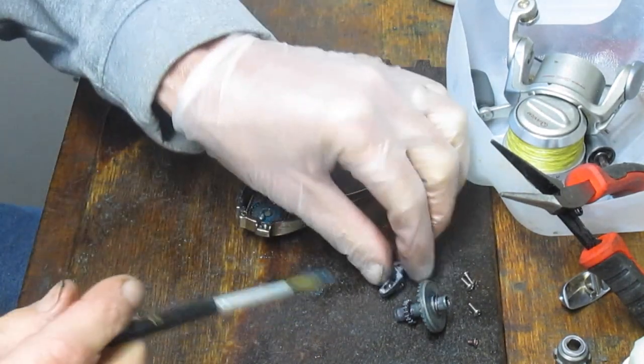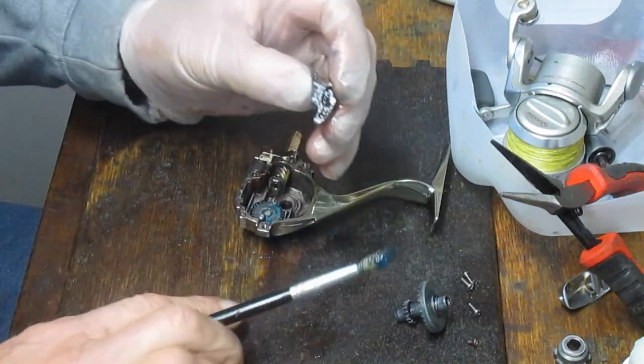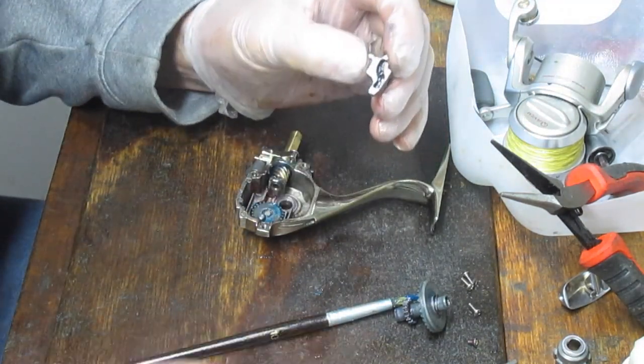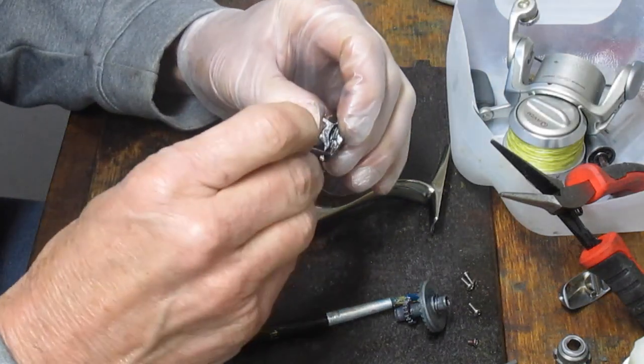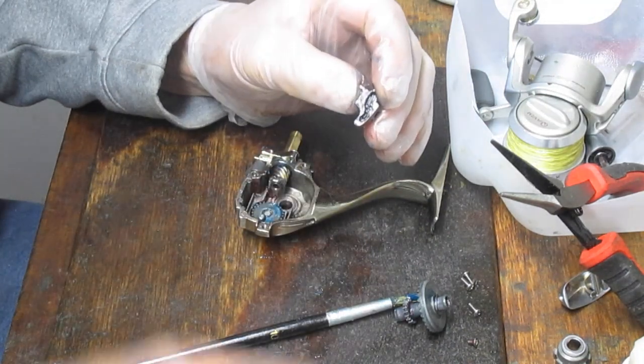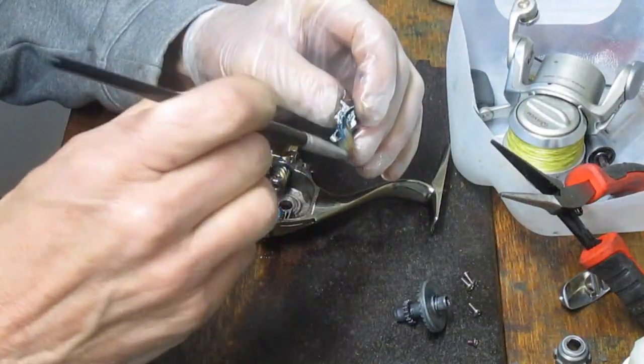Okay. Next up then we would take a look at the crosswind block. Again, there's a little channel that the stud from the crosswind gear rides in. So you want to make sure that you take out the old grease, put in some new.